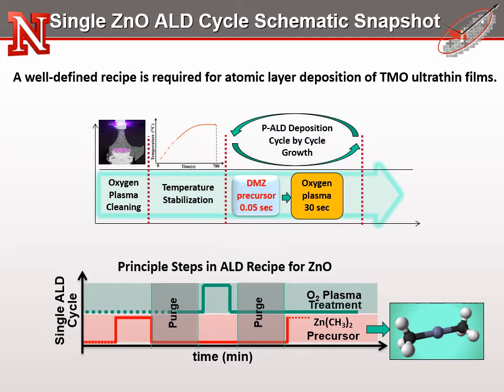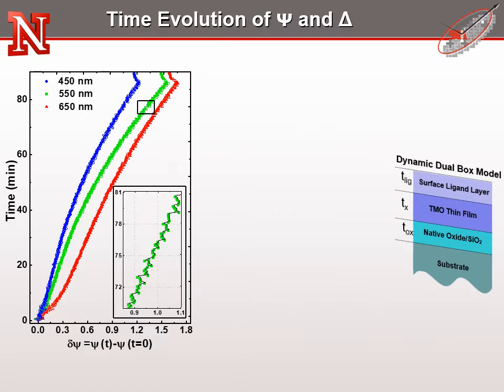Here are the details of our zinc oxide ALD recipe, which employs a pre-plasma cleaning treatment of the substrate, followed by a temperature stabilization process of the reactor chamber and thus the substrate. We use a volatile organometallic dimethyl zinc precursor, followed by in-cycle oxygen plasma treatment. The latter co-reactant is not only to remove any remaining ligands on the surface, but also to compensate the oxygen need of the transition metal oxide layer.